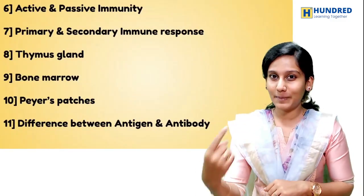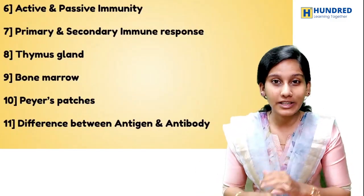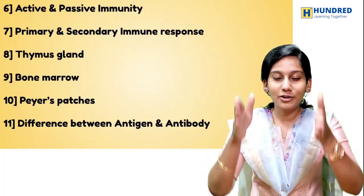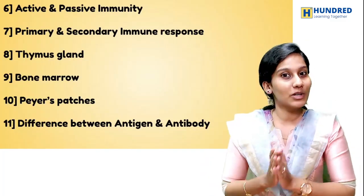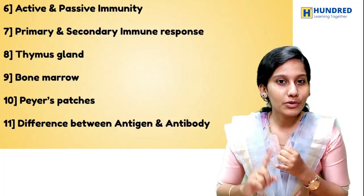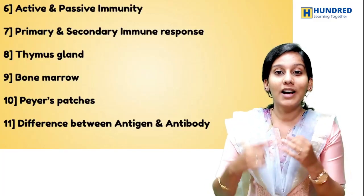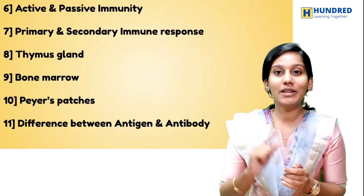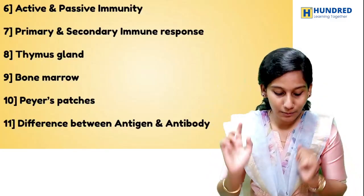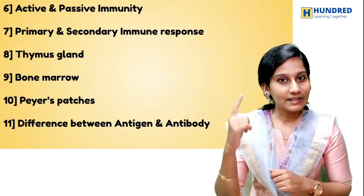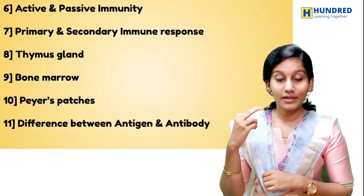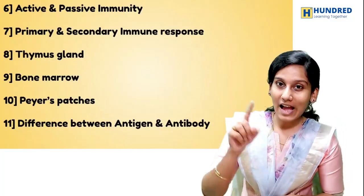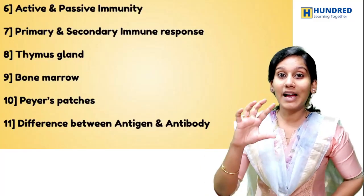The difference between active and passive immunity table is super important. In chapter 10, the first part is the immunity part. The types of immunity, structure of antibodies — these questions are repeated. Next: primary and secondary immune response, and the thymus gland along with the diagram.